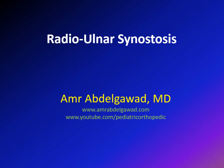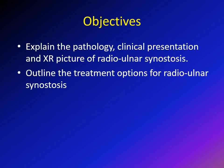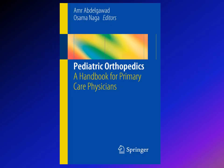This lecture is about radio-ulnar synostosis, which is a congenital condition that affects the elbow. The objectives are: first, the pathology; second, the clinical presentation; third, the X-ray picture of radio-ulnar synostosis; and finally, the treatment options for this condition.